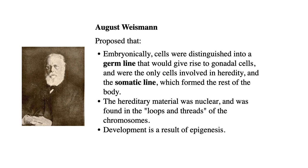Weismann also proposed that the hereditary material was nuclear — it's the stuff in the nucleus that matters. He described loops and threads that do something funny and probably contribute to heredity. He also proposed that development is the result of epigenesis — the idea that in the early embryo you've got undifferentiated stuff, generic goo, and progressively over the course of development it differentiates into specific tissues like brain, liver, eyes, and skin. We'll come back to this because how genes are modulated is an important process.